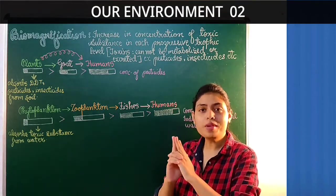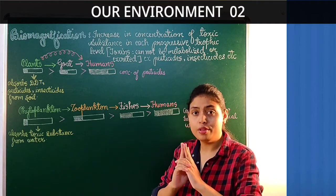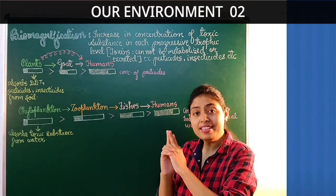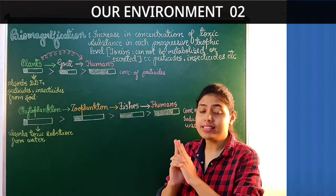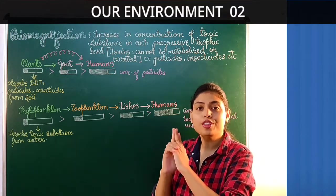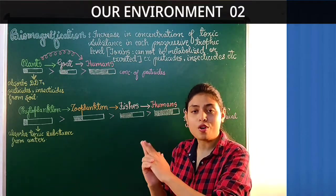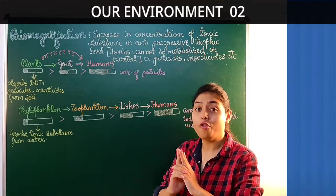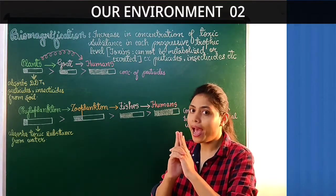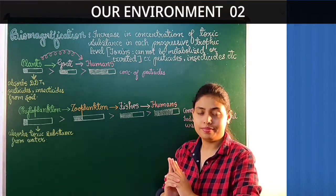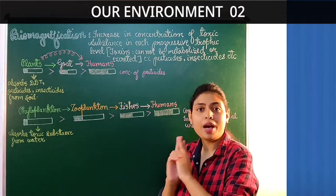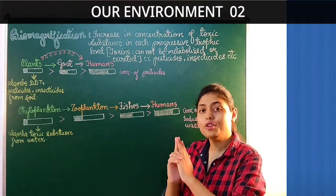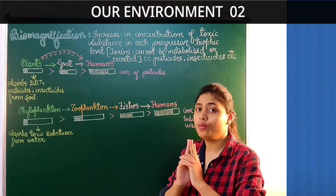Like humans, there are many other animals that are omnivores and eat both plant as well as animal products. So the chances of these chemicals entering the body of omnivores are maximum. Now let us study biomagnification in the aquatic food chain that operates in water.